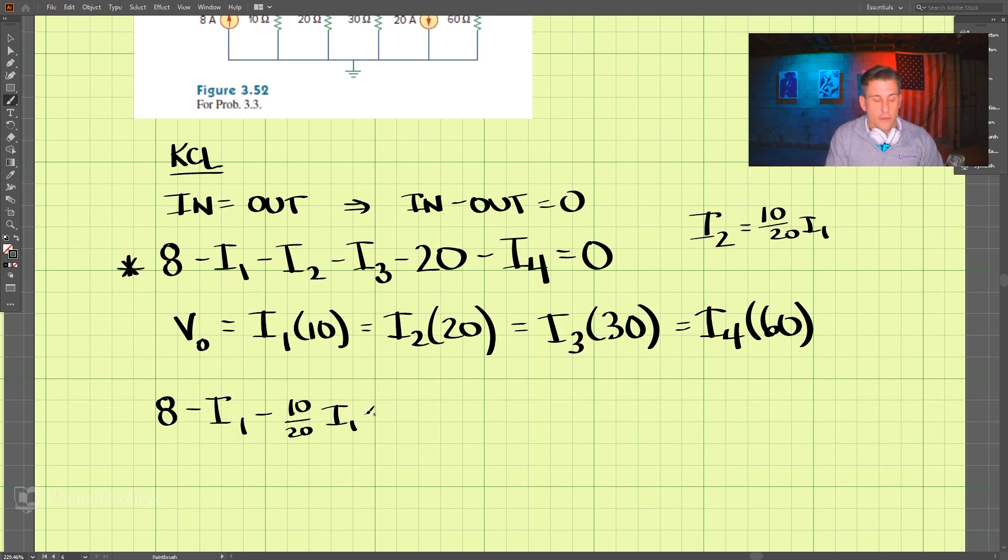And do the same thing for I3, we have 10 over 30 I1 minus 20 minus this I4, which is 10 over 60 I1, and that is equal to 0.